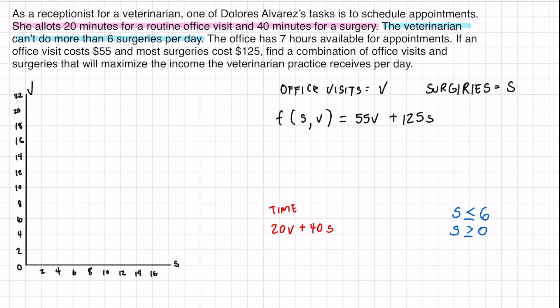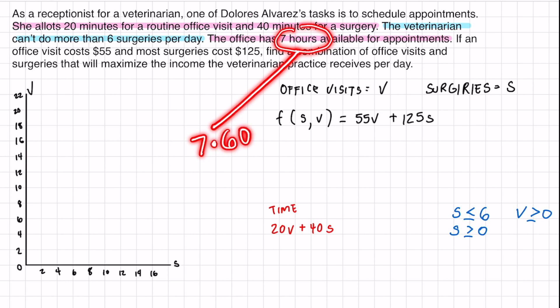The number of surgeries also has to be greater than or equal to zero — you can't have negative surgeries. That's why we don't include negative numbers on the graph. The same applies to office visits: v ≥ 0. Finally, the office has seven hours available for all appointments. Since the time was in minutes, we convert: 7 × 60 = 420 minutes. So: 20v + 40s ≤ 420.